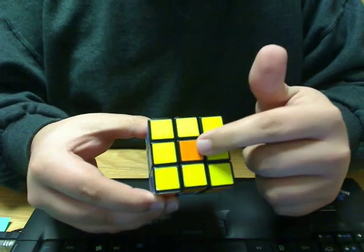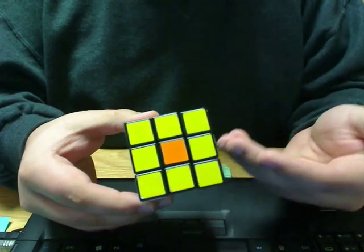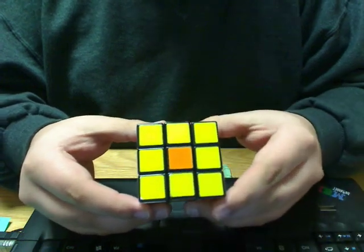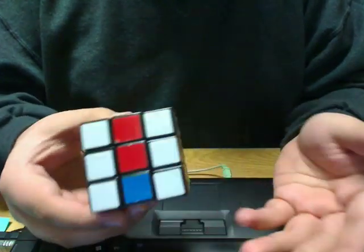except for the exclusion of the center on a regular 3x3. But on the Void Cube, you wouldn't see it. So, it would be null and void.